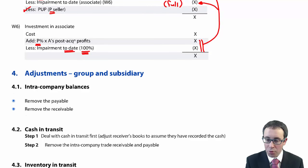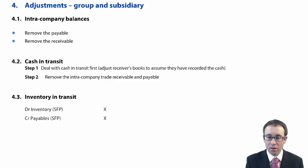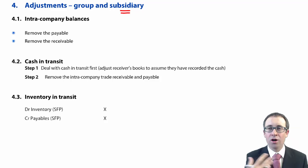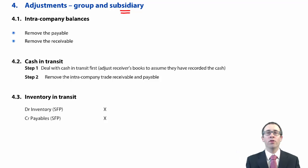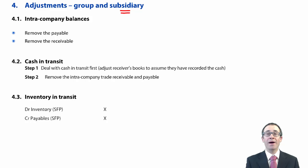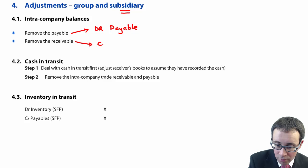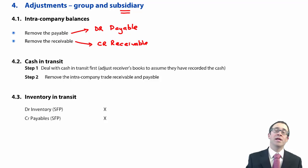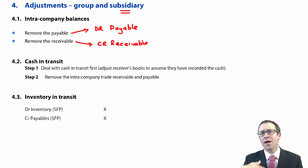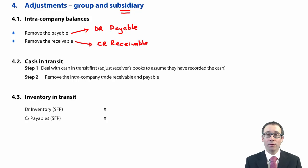Moving on to the adjustments between the group and the subsidiary. Intercompany balances: if you have intercompany balances, you need to remove the payable and remove the receivable — debit your payable and credit the receivable. The same applies to any intercompany loan: remove the investment asset and remove the loan liability.